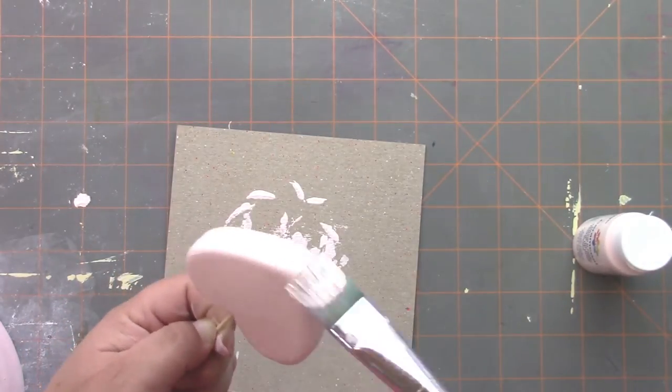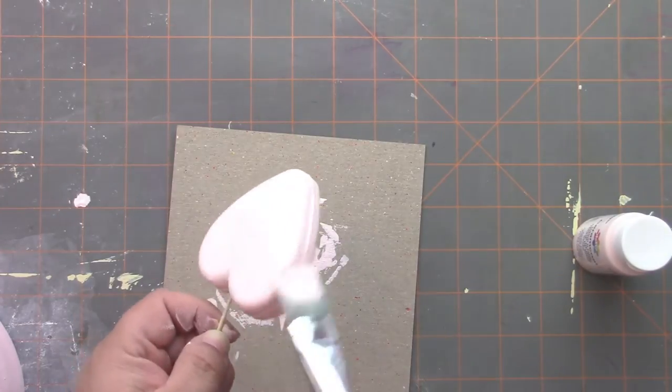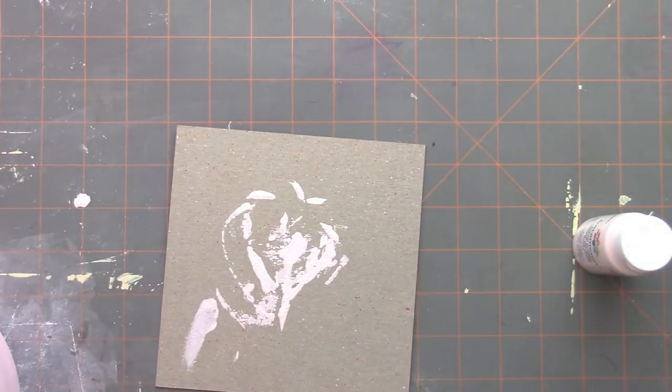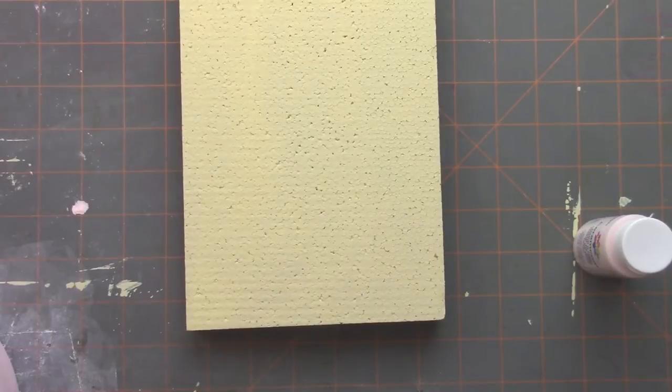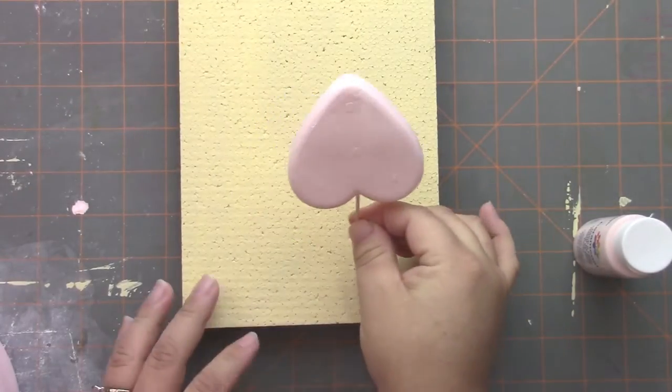You're going to want to add two coats of paint to this so that it's covered really well. And in between coats, you're going to stick the other end of the toothpick into another sheet of smooth foam to let it dry.